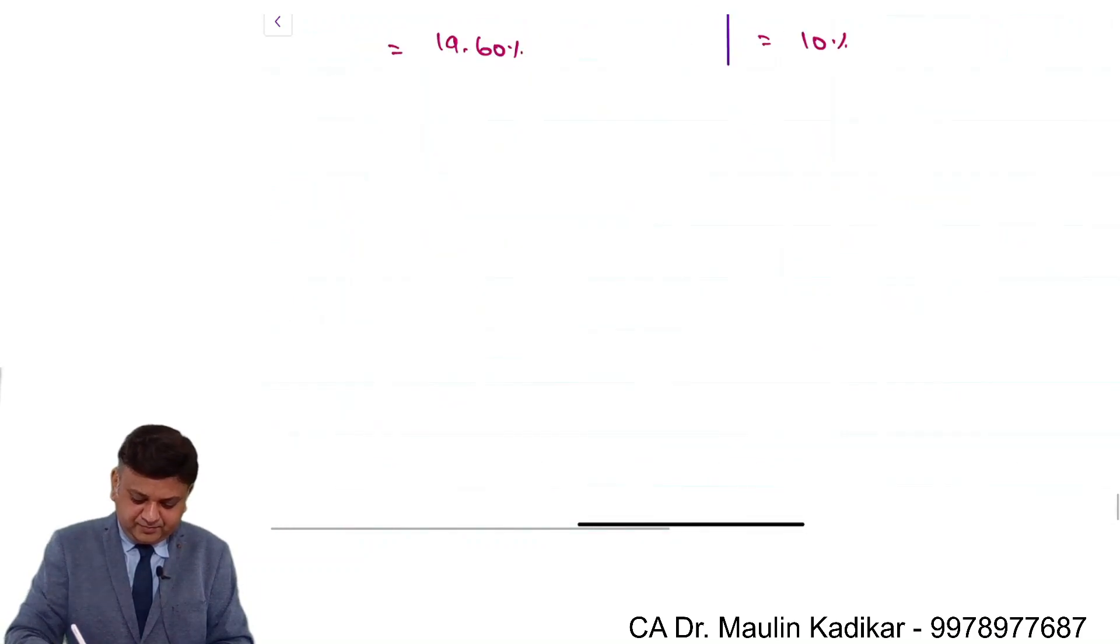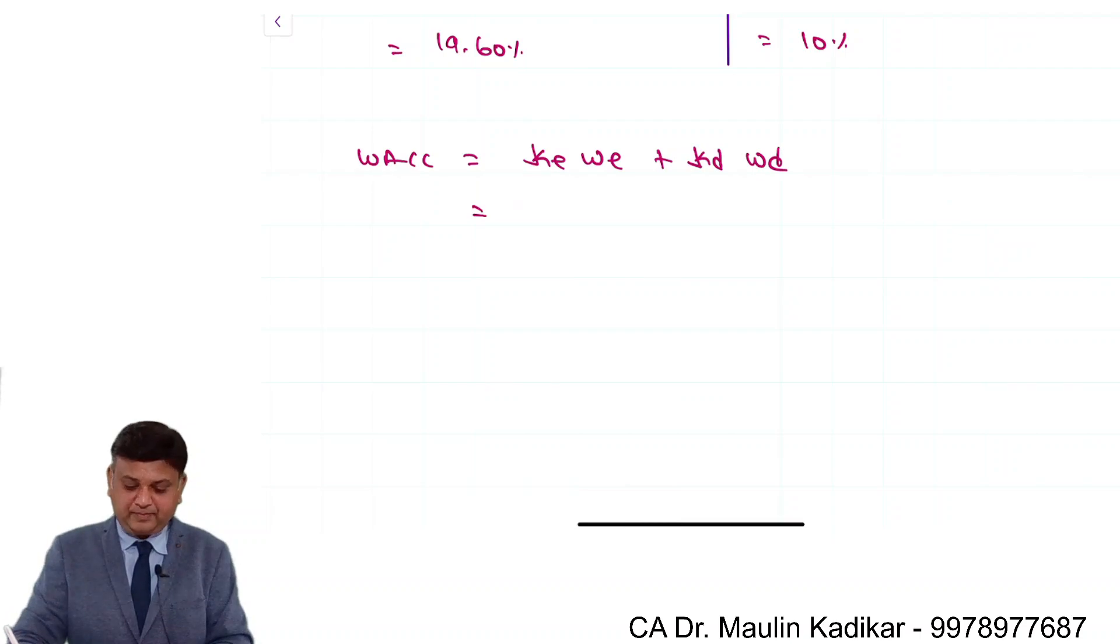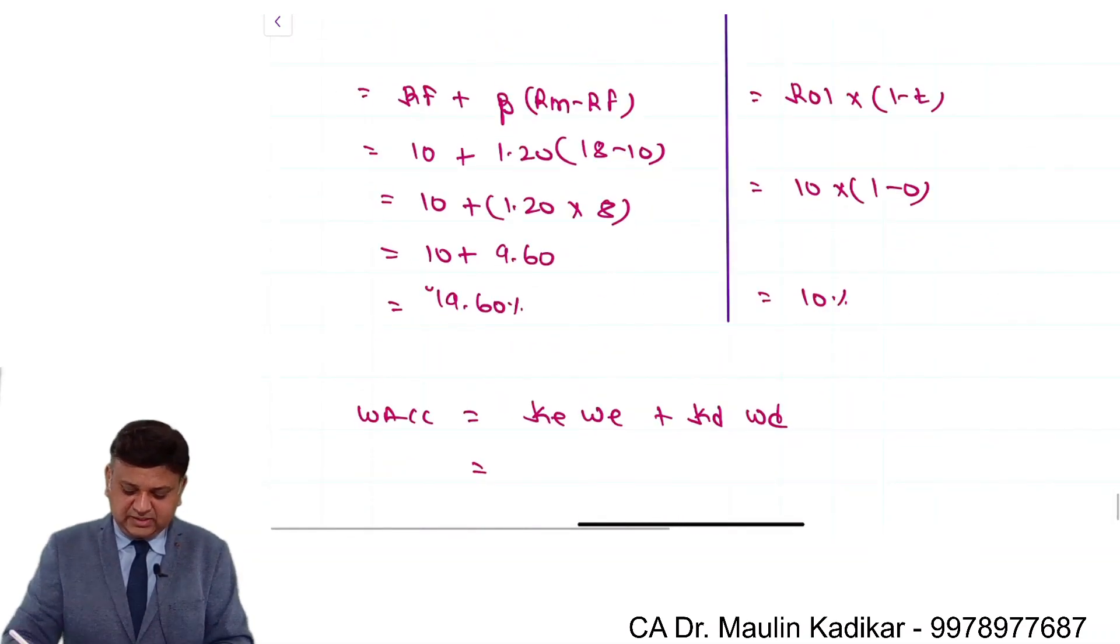Weighted average cost of capital, that is cost of equity into weight of equity plus cost of debt into weight of debt. Cost of equity is 19.6